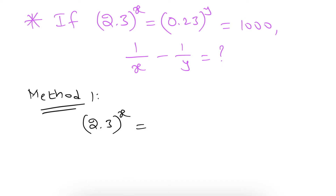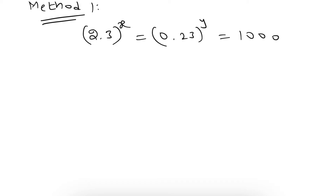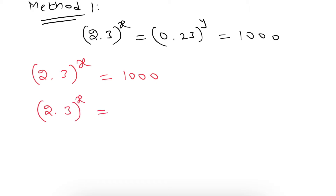Given: 2.3 to the power x equals 0.23 to the power y equals 1000. We separate this into two parts: 2.3 to the power x equals 1000, and 0.23 to the power y equals 1000. So 2.3^x = 1000 can be written as 10 to the power 3. Now I will apply log on both sides of the equation.